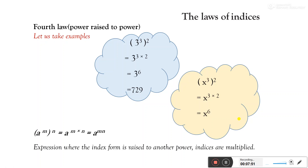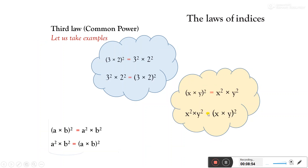Fourth law: Power Raise to Power. When a power is itself raised to another power, we multiply the powers. That is, a to the power m, whole to the power n, equals a to the power m × n. For example, 3 to the power 3, whole to the power 2: powers are multiplied — 3 × 2 — that is 3 to the power 6, which equals 729. Next example: x to the power 3, whole to the power 2 — powers multiplied, 3 × 2 — gives x to the power 6.